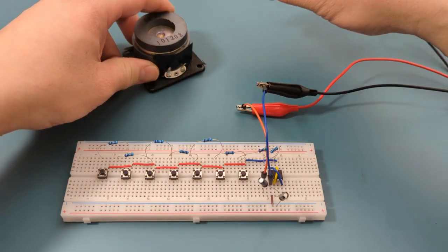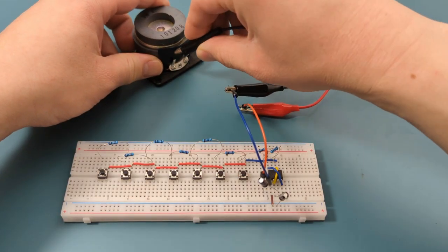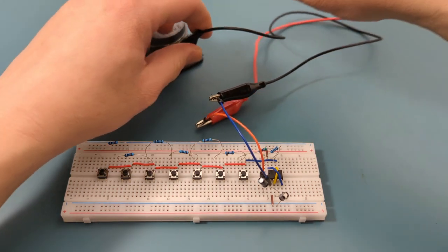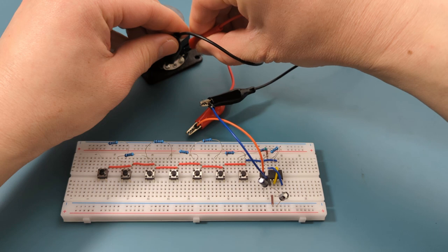Attach the black alligator clip to the negative terminal of the 5 watt speaker. Attach the red alligator clip to the positive terminal.